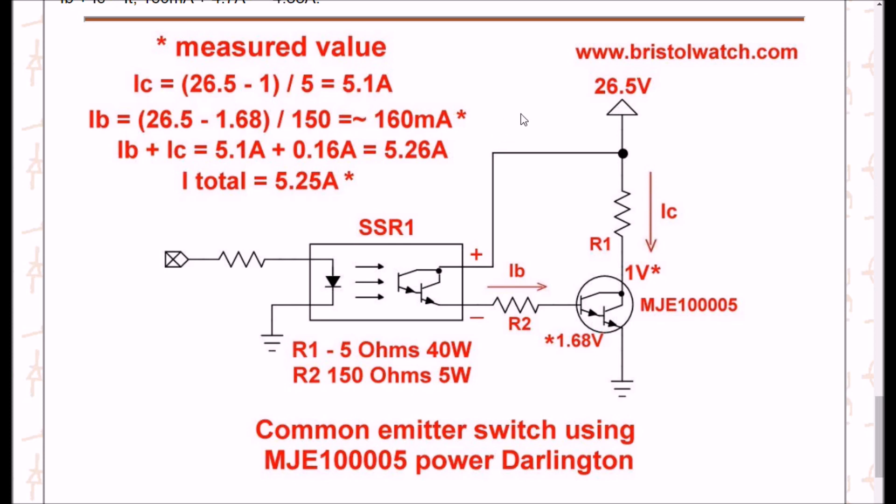Remember, you've got two current paths. By the way, this is conventional current, positive to negative. You're going to have 5.1 amps through R1 and 160 milliamps through R2, but both of them will be sourced from the 26.5 volts. When I actually measured the total current, I came up with 5.25 amps. Calculates very, very closely.